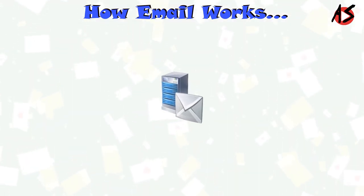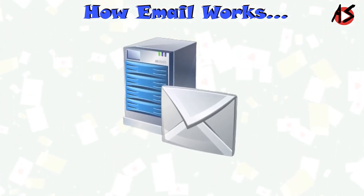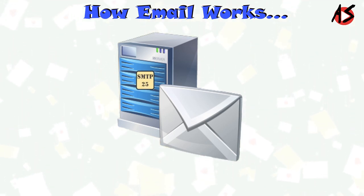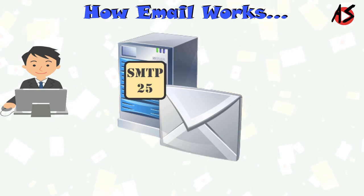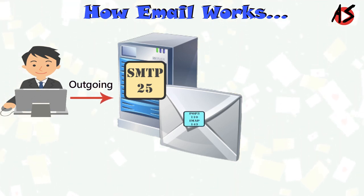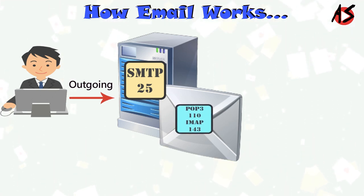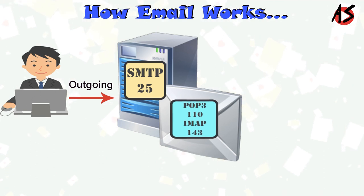The email system consists of two different servers running on a server machine. One is called the SMTP server on port 25, which handles outgoing mail. The other is either a POP3 server on port 110 or an IMAP server on port 143, both of which handle incoming mail.